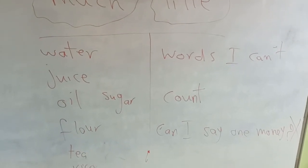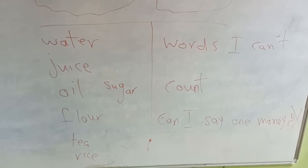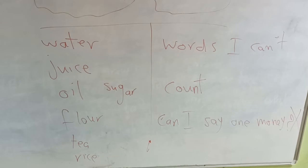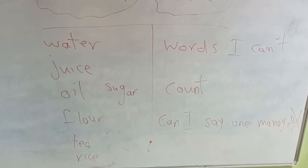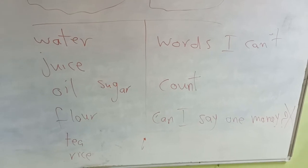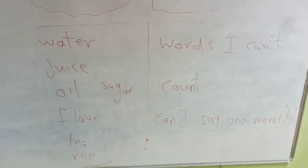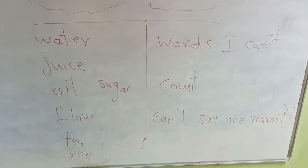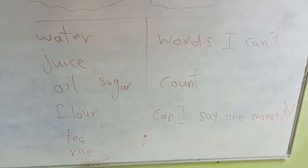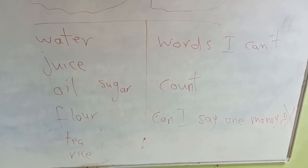Also, all powders like flour — we use much and little with them. What do we need in order to bake a cake? I need flour. Do we need much flour or little flour? Sometimes I need little flour and sometimes I need much flour in order to bake a cake or a loaf of bread. Also: tea, rice, sand.